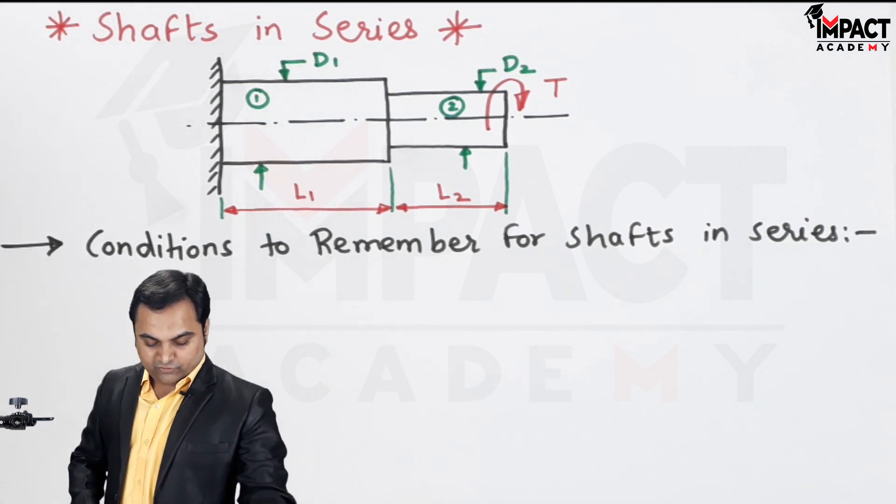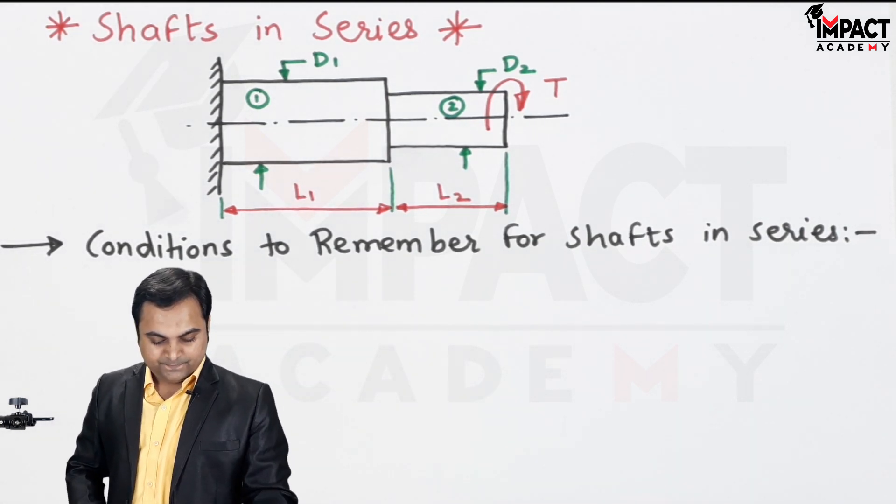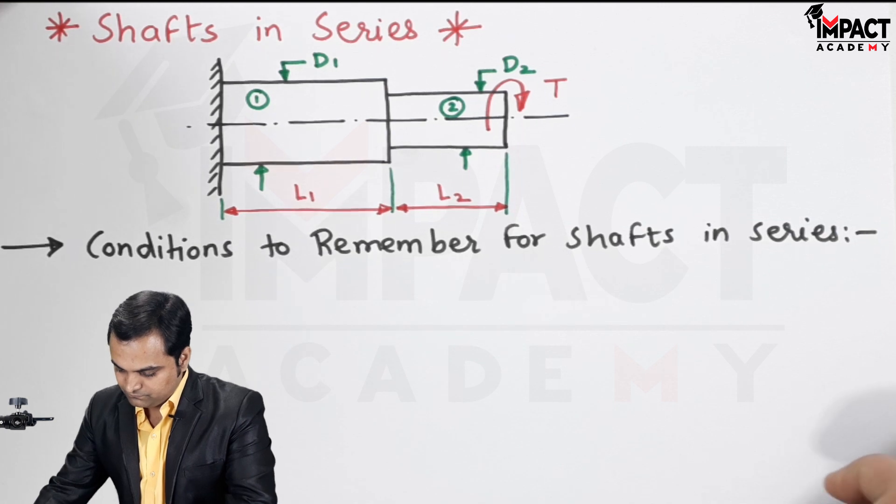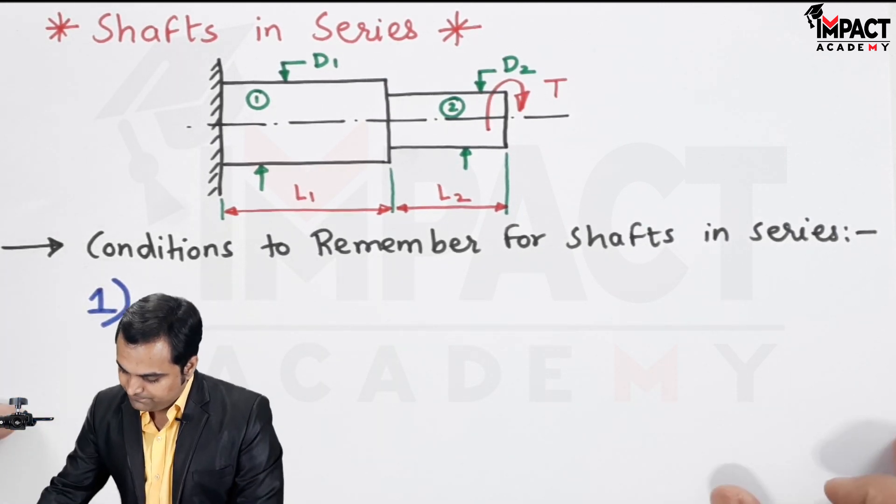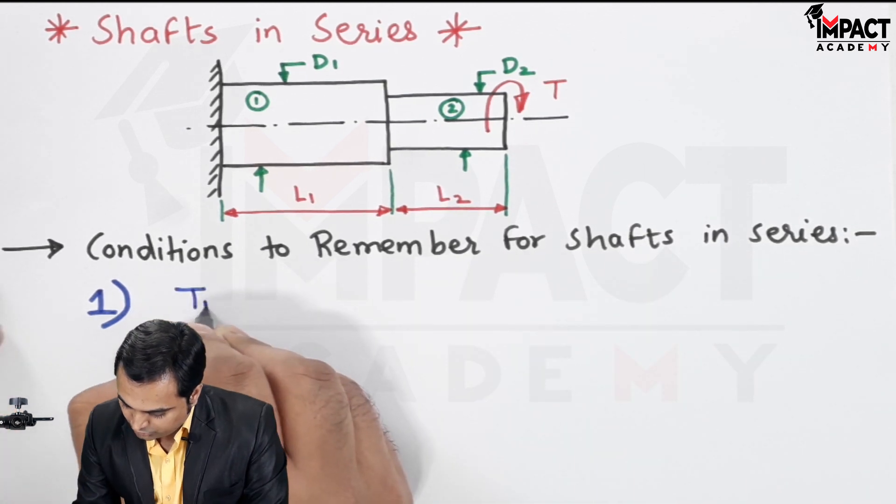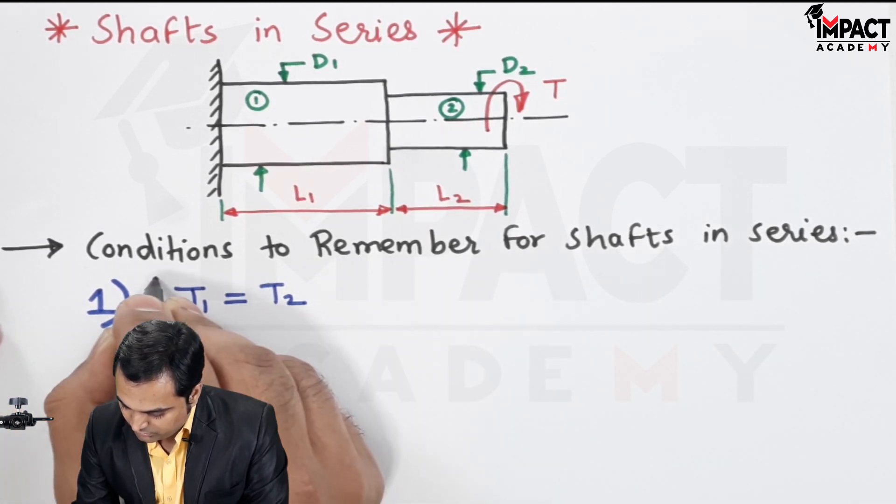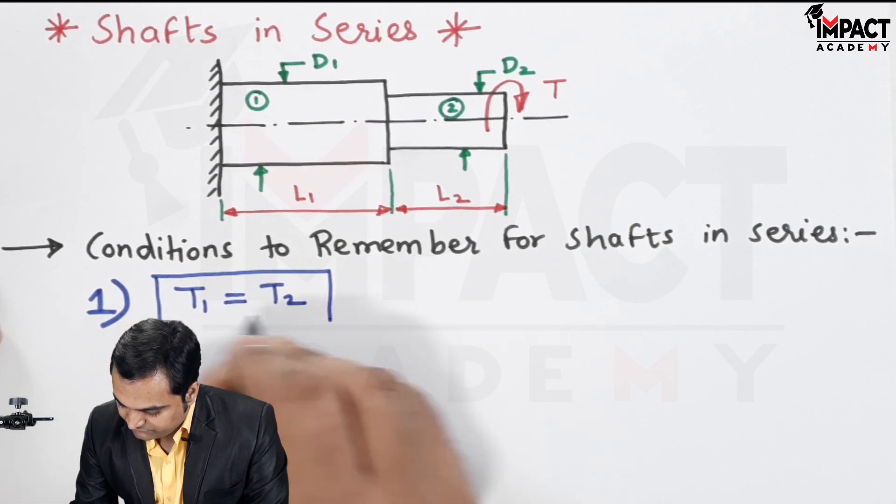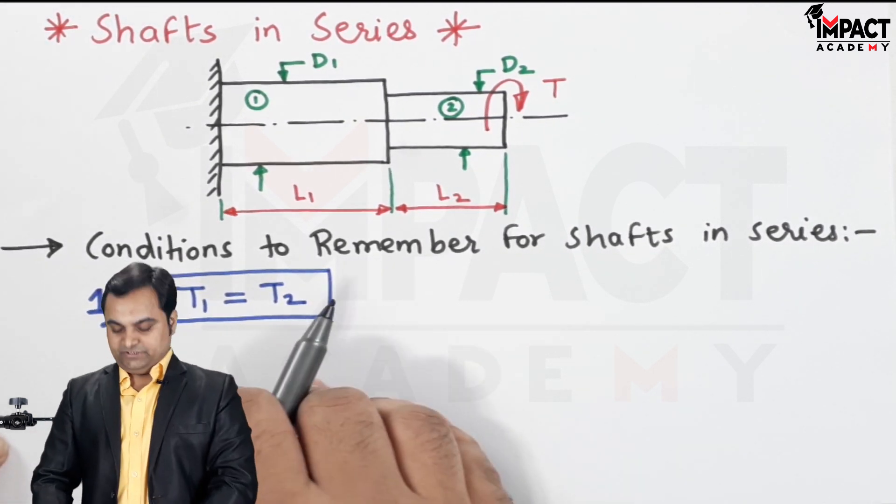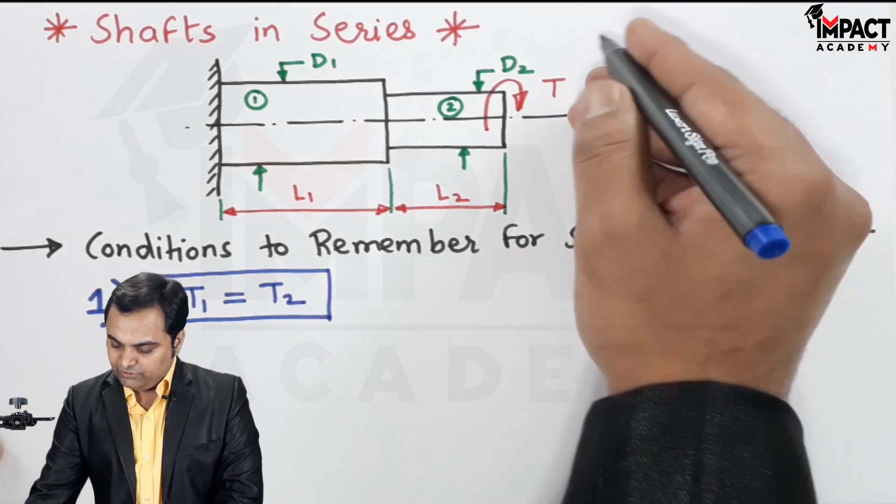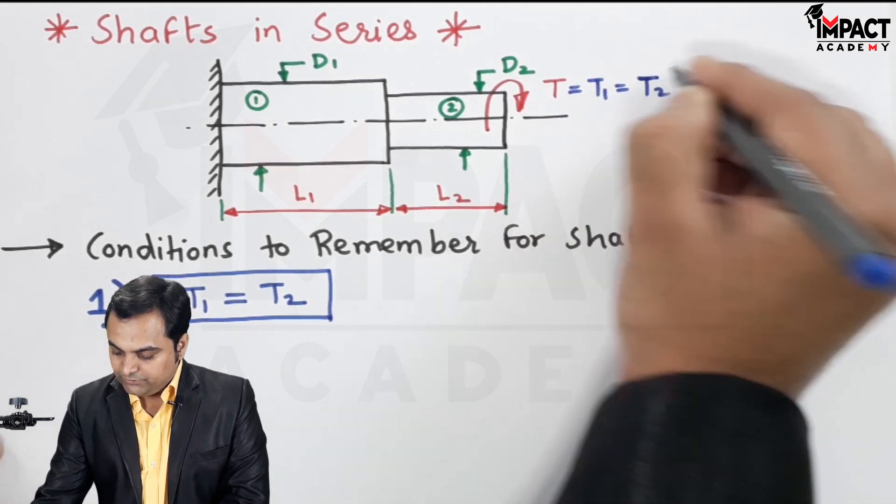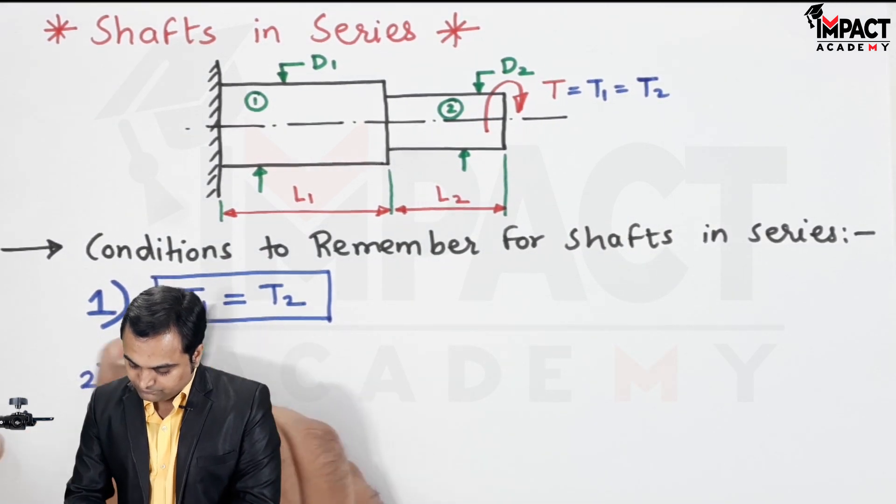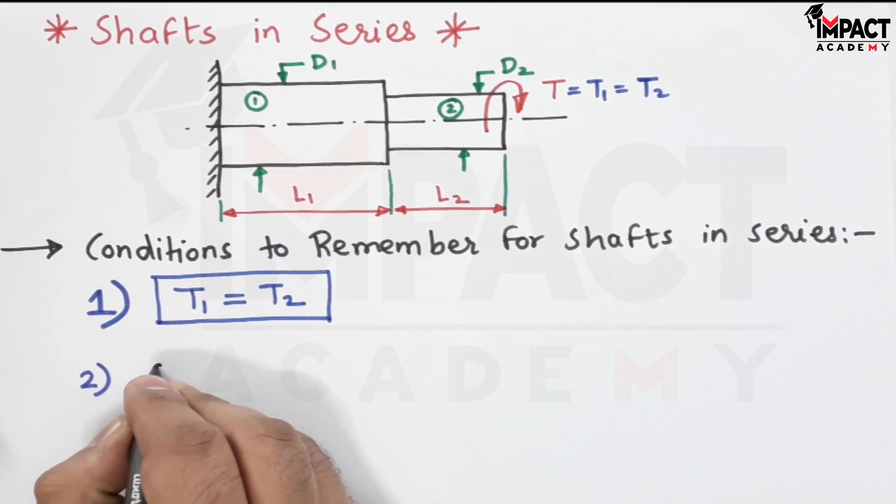The conditions to remember for shafts in series are: Number one, the torque is equal for both the shafts, that is T1 is equal to T2. And the angle of twist, which is the total angle of twist theta, it gets added.